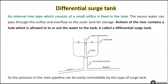Differential surge tank: An internal riser pipe which consists of a small orifice is fixed in the tank. The excess water can pass through this orifice and overflow to the outer tank for storage. The bottom of the riser contains a hole which allows water in or out of the tank. The pressure in the main pipeline can be easily controlled by this type of surge tank.